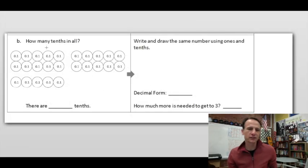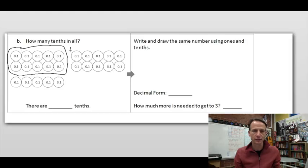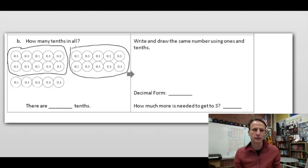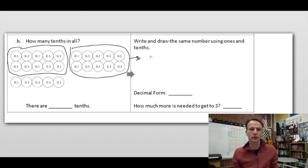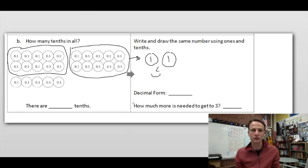Let's do the next one. How many tenths in all? They arranged them in a logical manner for us — there's ten tenths and another ten tenths. So all together, these make twenty tenths, which we know is equal to two ones. These ten tenths are one, and these ten tenths are one.